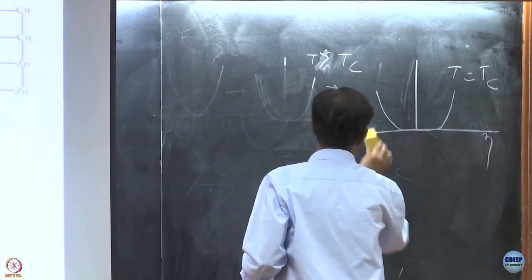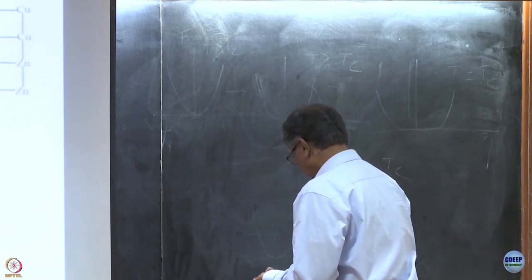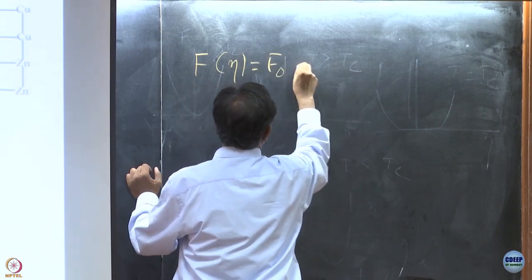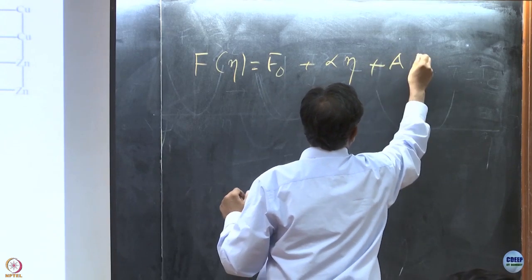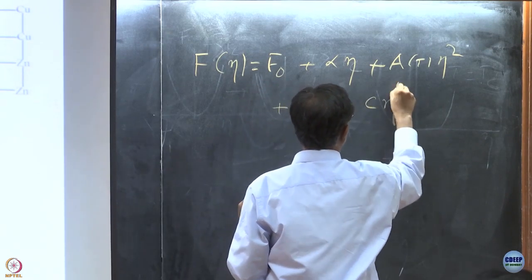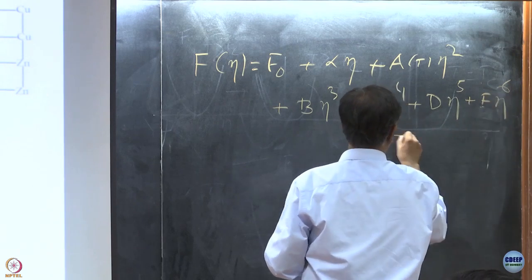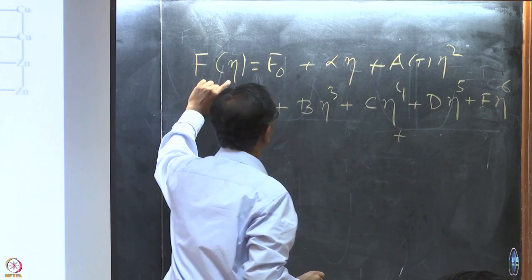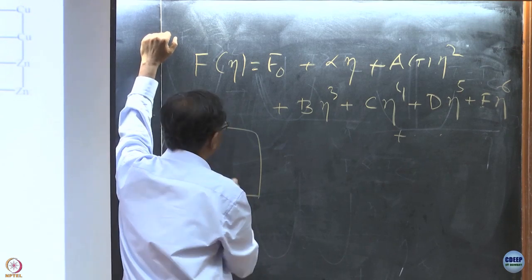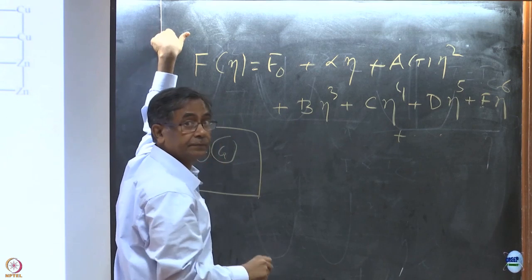Van der Waals is a mean field, Ramakrishnan-Yussouff is a mean field, Landau is a mean field — all are the same at the end of the day, because when you expand the free energy you are neglecting fluctuations. Now, near the gas-liquid critical point, what happens? There are regions which are liquid-like and regions next to them which are gas-like — large-scale density fluctuations. I look at the density as fluctuations around the average density.